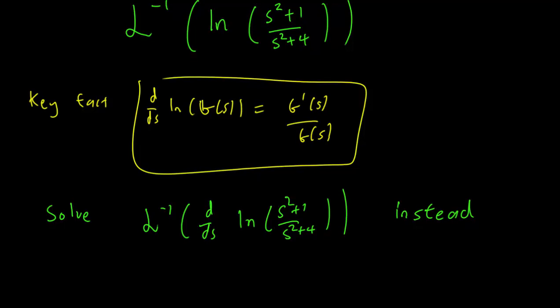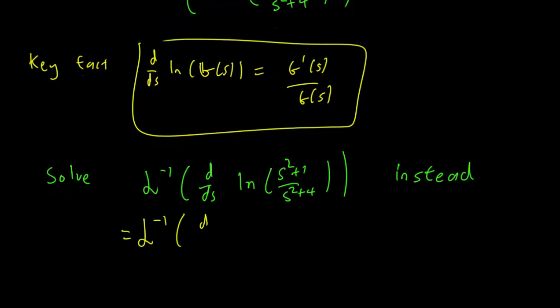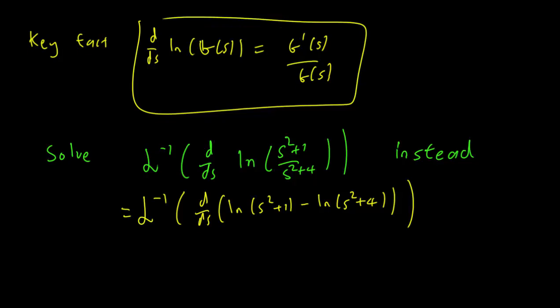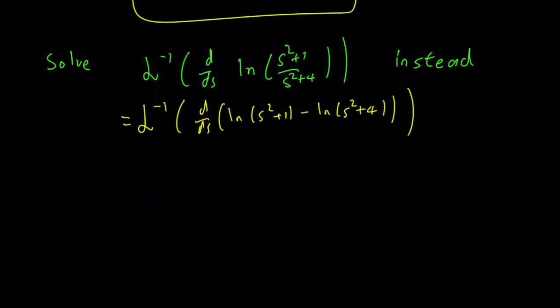We're going to solve a modified problem. The first thing to do is to use the properties of a log. This just becomes the inverse Laplace transform of the derivative of log(s²+1) minus log(s²+4), because log(a/b) equals log(a) minus log(b), which is one of the first things you learn about logs.